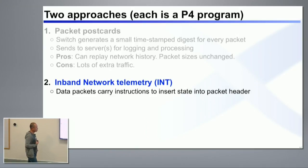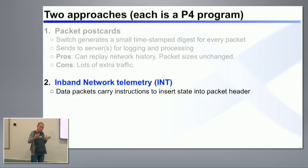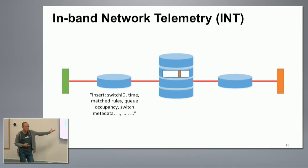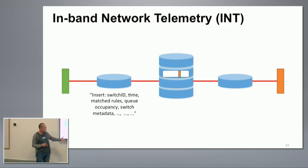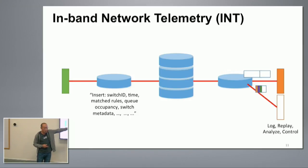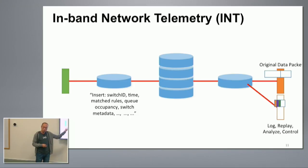The other approach we are building and sharing with the community is what we call in-band network telemetry, or INT. Essentially, switches carry data packets, but these data packets also serve as probe or log packets at the same time. The original packet travels the network; each switch adds its own internal metadata into the packet and forwards it. That internal metadata can be anything: switch ID, input port, output port, arrival time, departure time, matched rules, queue occupancy, congestion status — any switch metadata can be added. When the packet arrives at the destination, the end host networking stack or last-stop switch can undo all the changes, revert the packet to its original form, and send just the metadata up to the log system.